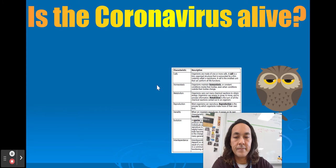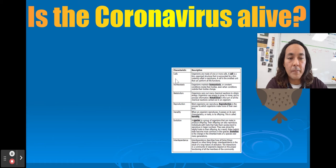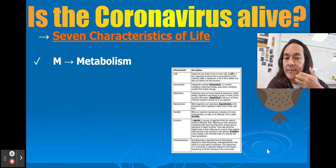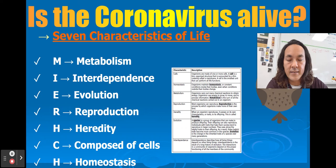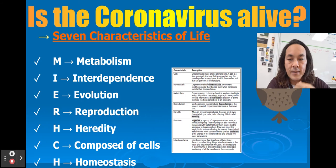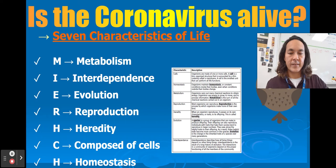For our first assessment, think about: is the coronavirus alive? Many biology classes start with 'what is life' and characteristics of life. Here are the seven characteristics that most biologists agree on: metabolism, interdependence, evolution, reproduction, heredity, composed of cells, and homeostasis. You don't need to memorize these — you did a reading article and practiced in class. We also looked through microscopes to find organisms in pond water and researched how they show these characteristics. Let's go through each one to figure out if SARS-CoV-2 is alive.